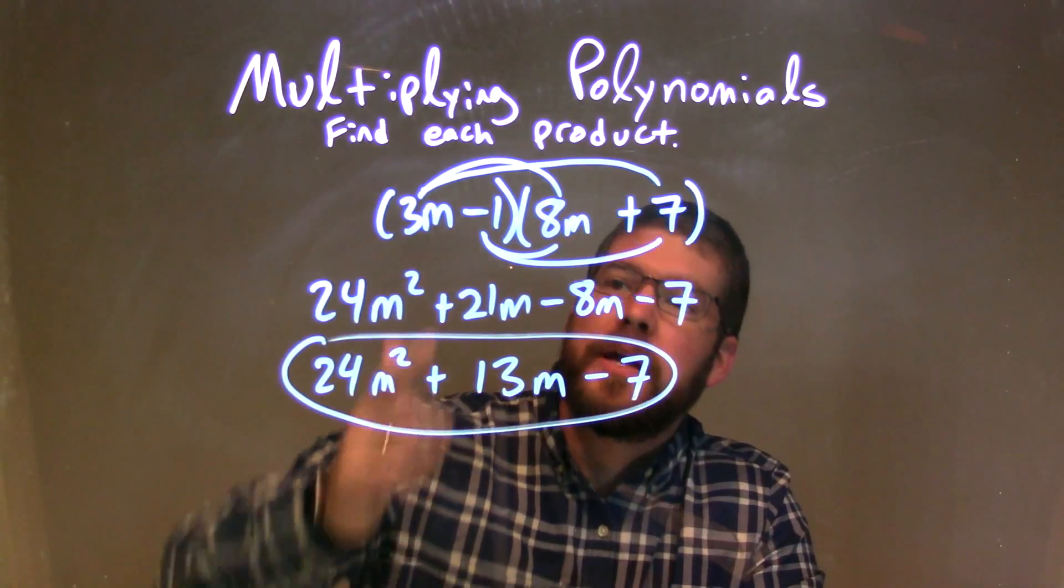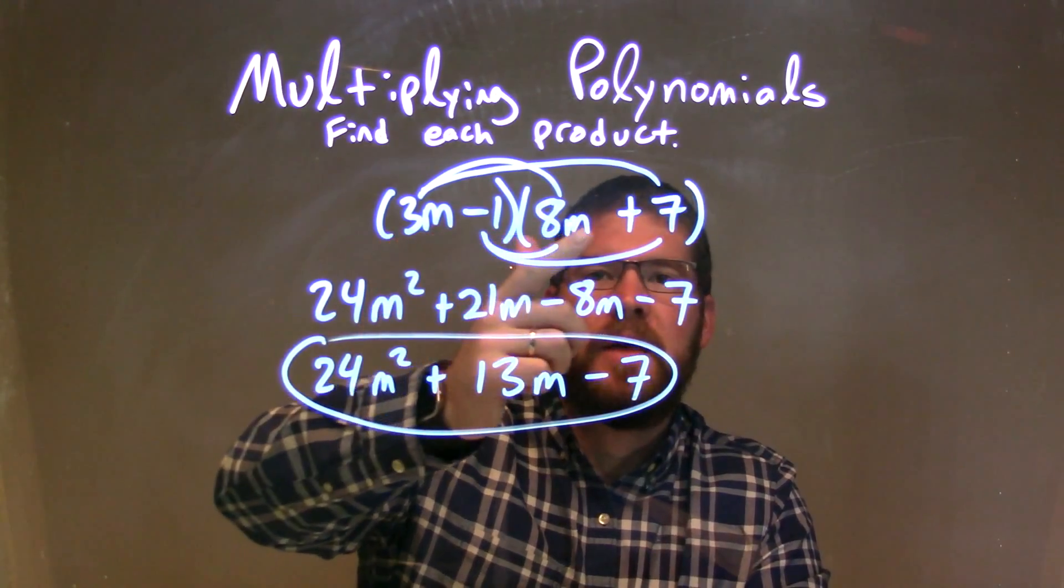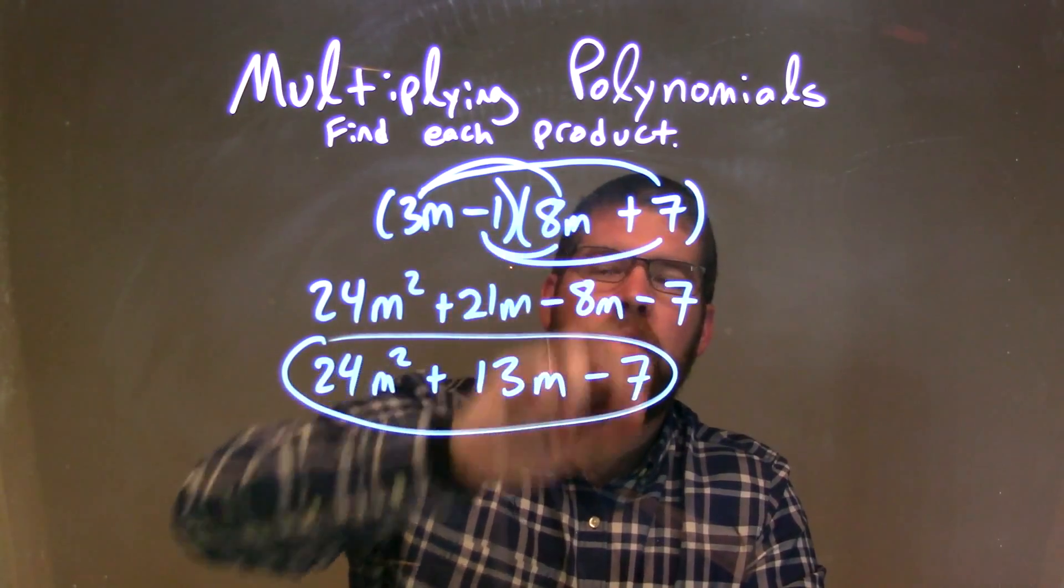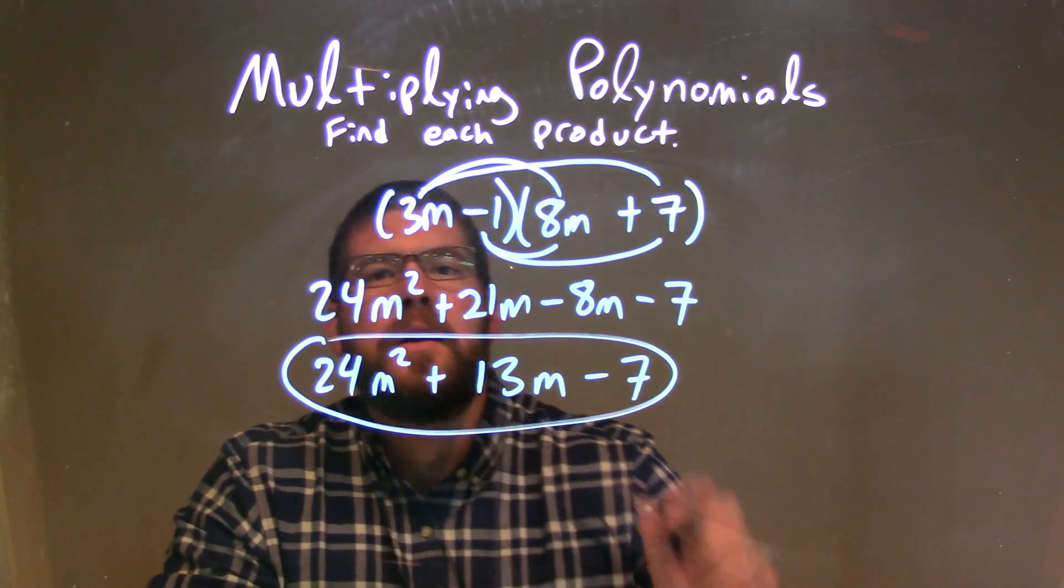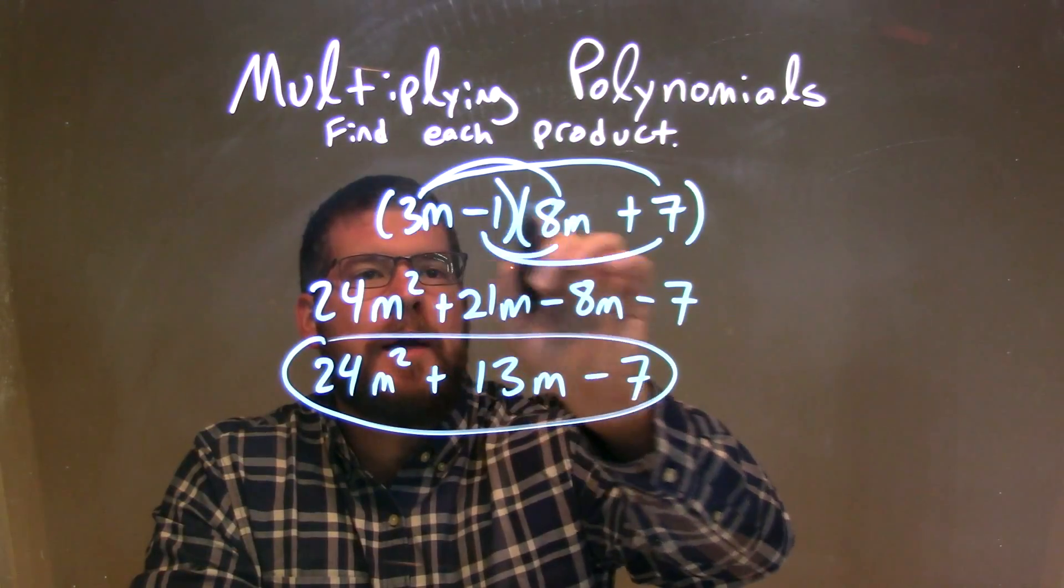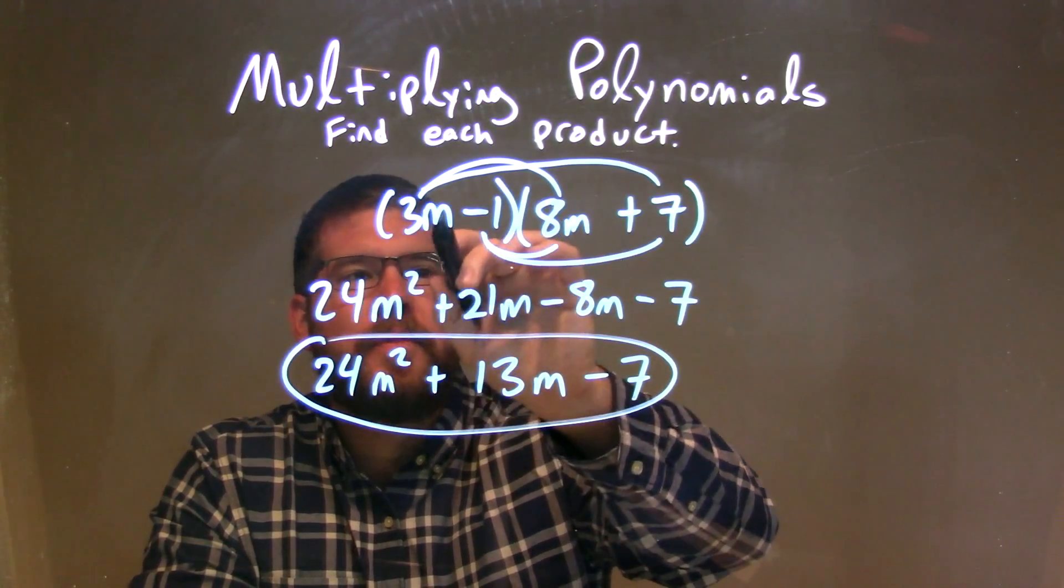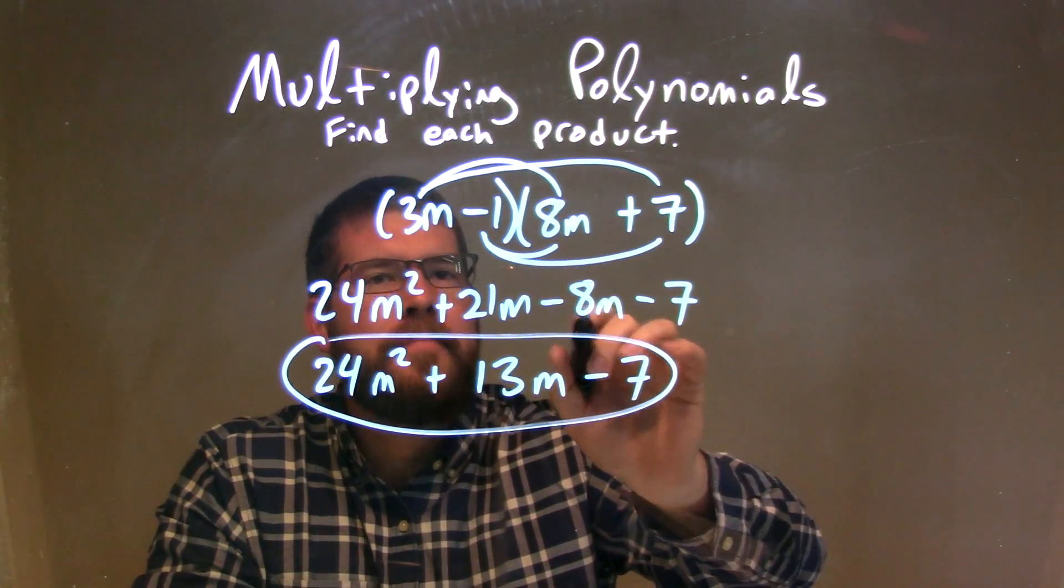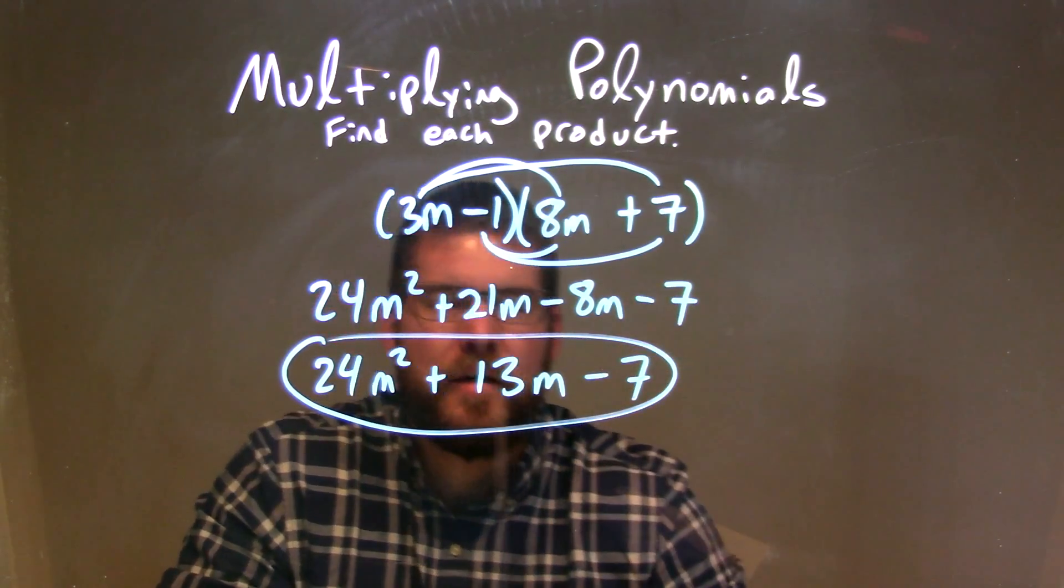So let's recap. We're given 3m minus 1 times 8m plus 7, multiplied all parts of my first parenthesis by all parts of my second parenthesis. That left me with 3m times 8m was 24m squared. 3m times 7 is 21m. Minus 1 times 8 is minus 8m. And minus 1 times 7 is minus 7.